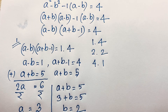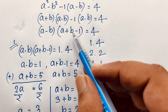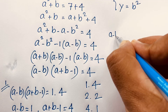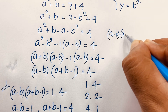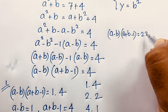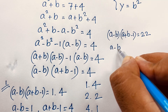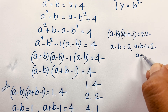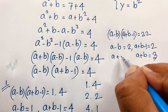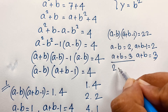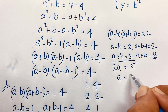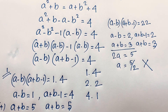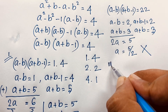Case 2: a minus b equals 2 and a plus b minus 1 equals 2, so a plus b equals 3. Adding both equations: 2a equals 5, so a equals 5 over 2. This is not a positive integer, so this case is not possible.